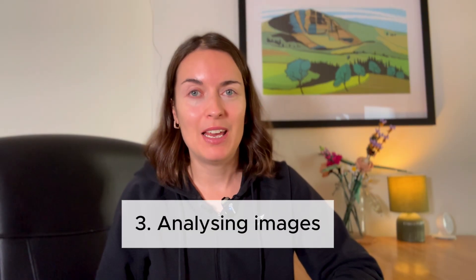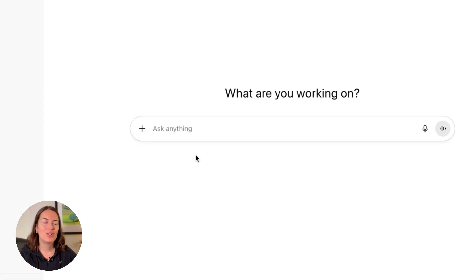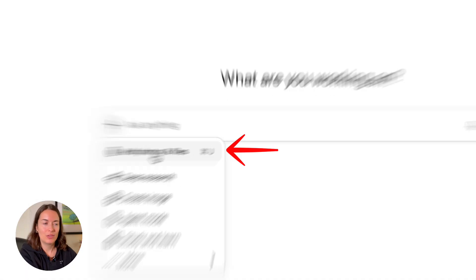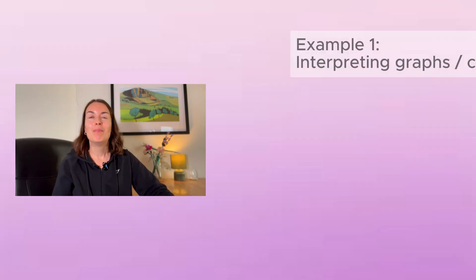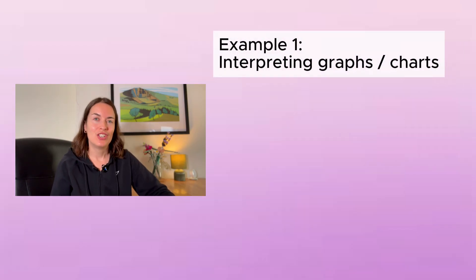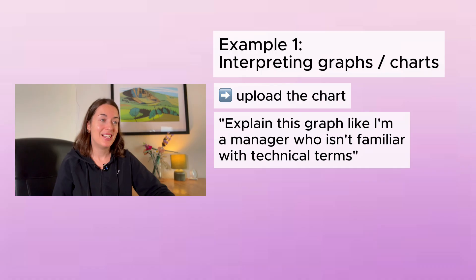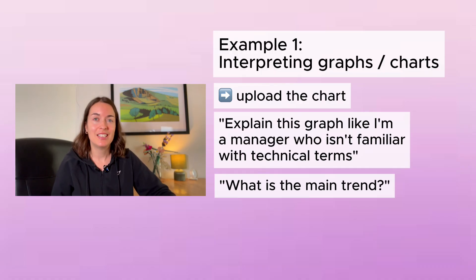The next thing ChatGPT can do is analyse images. You click on the plus sign and select 'upload photos,' then prompt ChatGPT about that photo. For example, imagine you're trying to analyse a chart but you're not sure what it means. You can ask it something like 'explain this graph like I'm a manager who isn't familiar with technical terms' and ask what the main trend is.